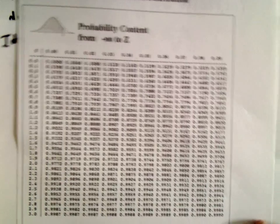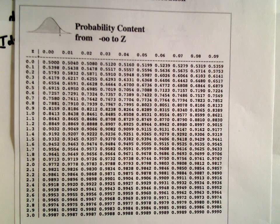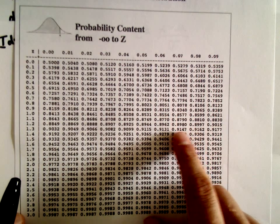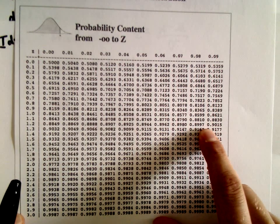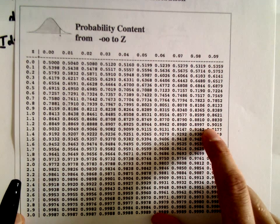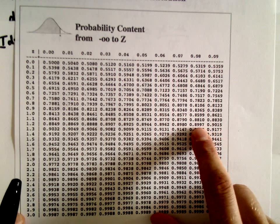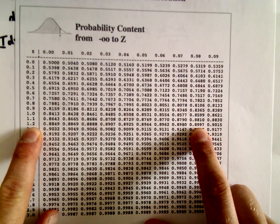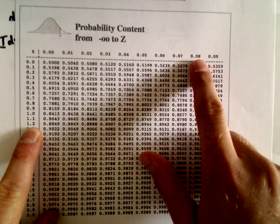I don't think there's one in here that's exactly 0.90, but it's close. Let's see, 0.90, looks like roughly right there. There's 0.8997 and 0.9015. I'm going to take the closer of the two values. So that corresponds to a z-score of 1.28.